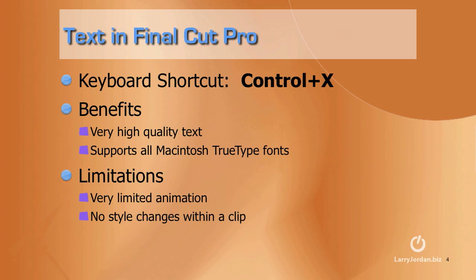I want to start by illustrating how to use text in Final Cut Pro. Here's a very cool keyboard shortcut — rather than having to create text by going to the generator menu, Ctrl+X is a fast keyboard shortcut to creating full screen text. The benefit to creating text inside Final Cut is it's extremely high quality, and Final Cut supports all Macintosh TrueType fonts.